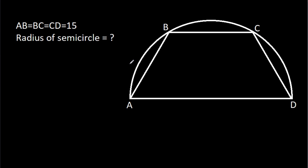In this video, we have been given a semicircle in which AB is 15, BC is 15, and CD is 15. We have to find the radius of the semicircle.